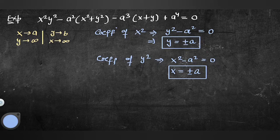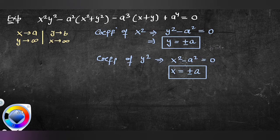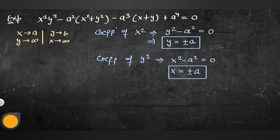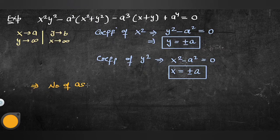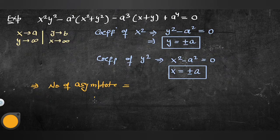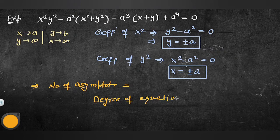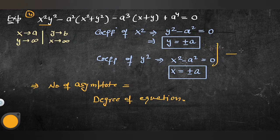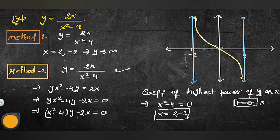ایک اہم rule: asymptotes کی تعداد = equation کی degree۔ اس equation کی degree 4 تھی تو 4 asymptotes آئے۔ پچھلی example y = 2x/(x²−4) کی equation کی highest power 2 تھی تو 2 asymptotes آئے۔ جتنی equation کی degree ہوگی اتنے ہی asymptotes آئیں گے۔